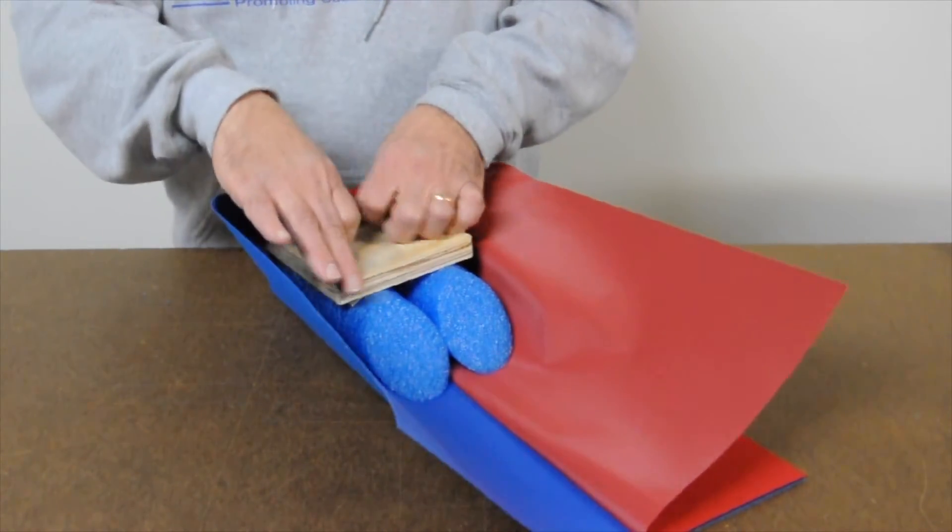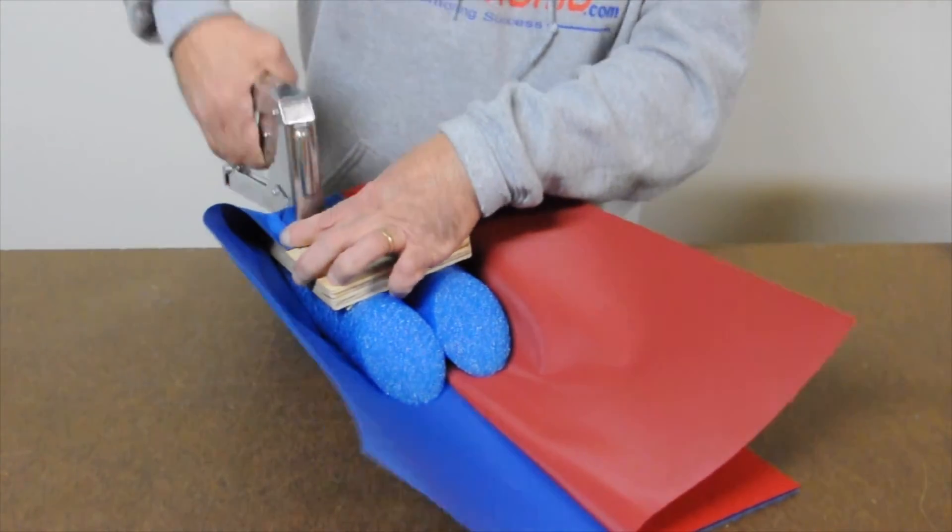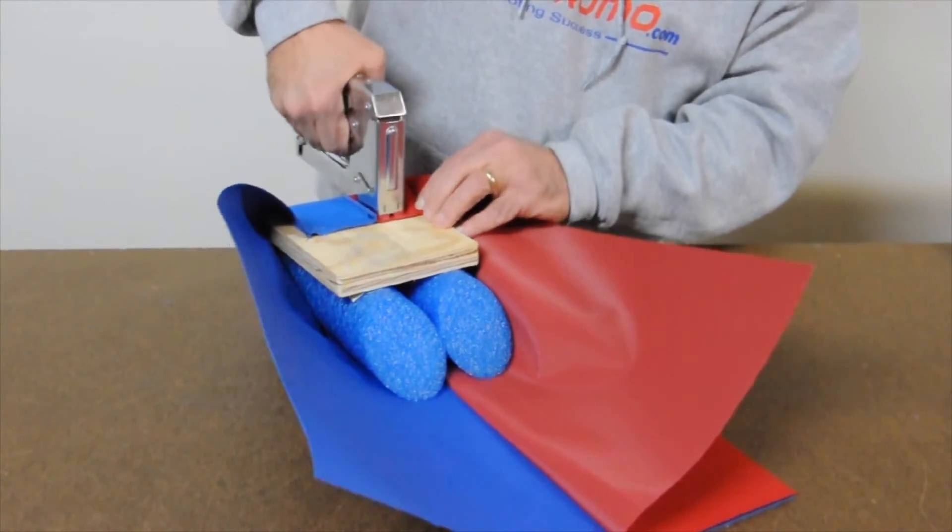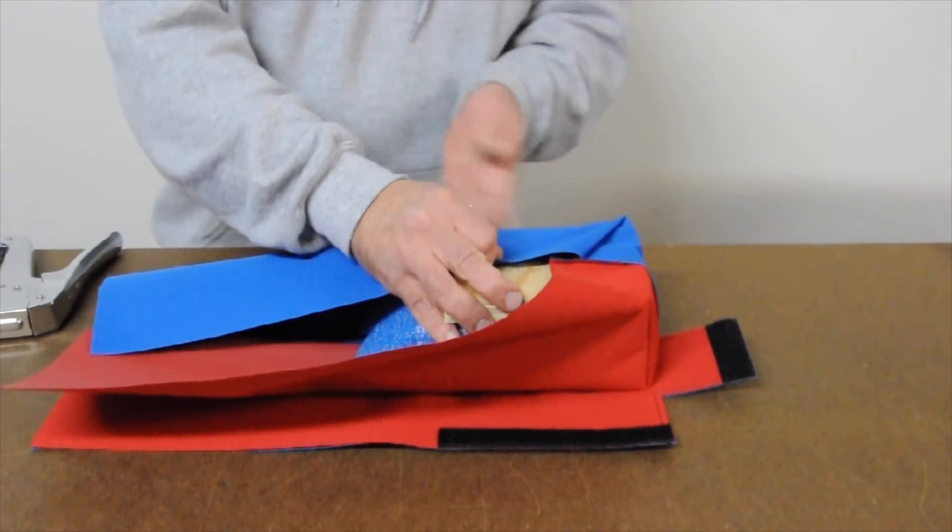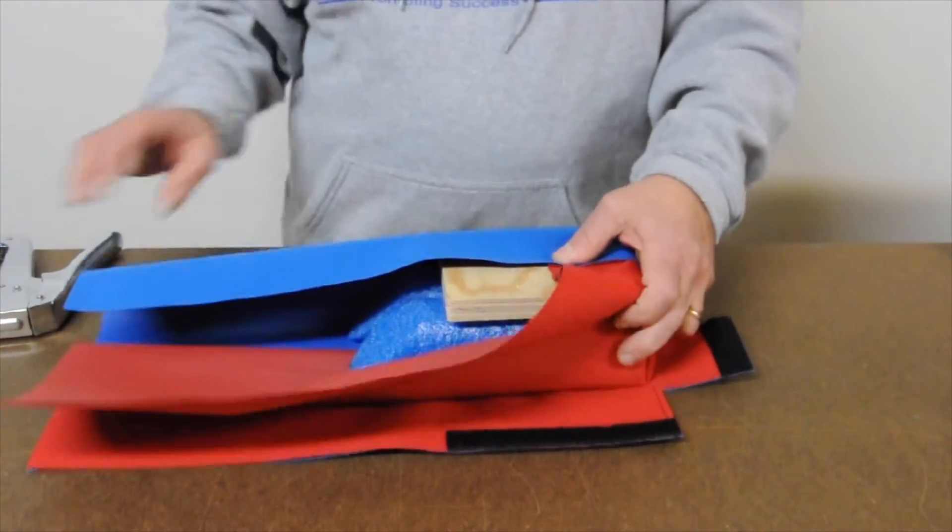Fold the back of the material over the wood and staple it in place. Fold the edges over and secure them in place with the staple gun as well.